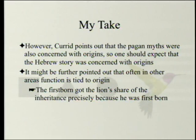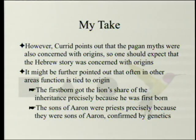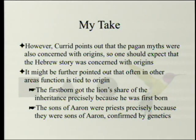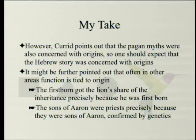It might be further pointed out that often function is tied to origin. The firstborn in Israelite society got the lion's share of the inheritance precisely because he was the firstborn — the history determined the order. And if the history were different, the order would be different. The sons of Aaron were priests precisely because they were sons of Aaron. And this is not just Hebrew propaganda — it turns out that people whose name is Cohen in Jewish society are descended from the same Y chromosome, meaning there really was somebody who could conceivably have been Aaron.